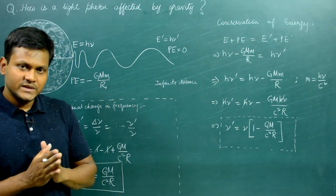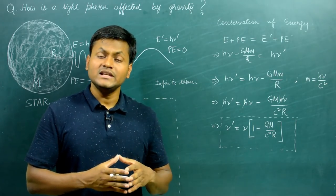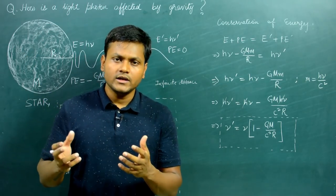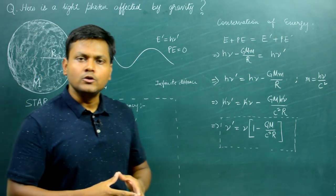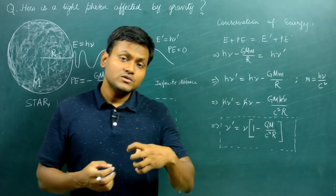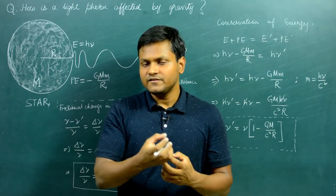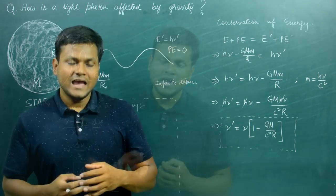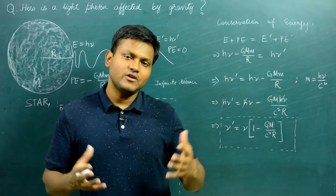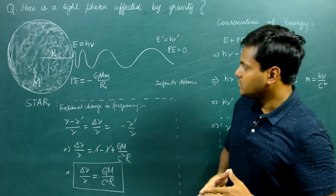Gravitational redshift is a very important phenomenon observed in our universe. I want to specify that all of these concepts properly come from general theory of relativity. What we have done here is use an alternate viewpoint to arrive at the same conclusion: when a photon moves through a gravitational potential, it loses energy — not because of rest mass, but because of the mass equivalent of its energy — and that results in a change in the frequency of the photon as it travels in a gravitational potential. That is all for today's discussion; see you in the next one.